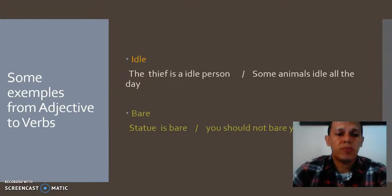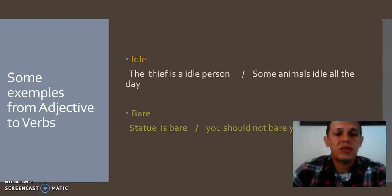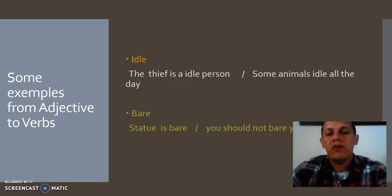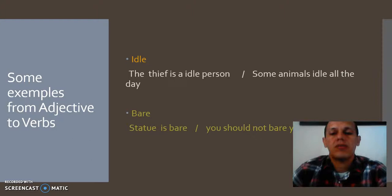There is another group — from adjective to verb. We start with 'idle.' The sentence 'The thief is an idle person' — 'idle' is an adjective. And the conversion as a new word: 'Some animals idle all day' — 'idle' as a verb. Then 'bare' as an adjective: 'The statue is bare.' And the conversion: 'You should not bare your arm' — 'bare' as a verb.